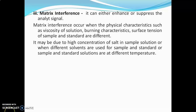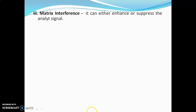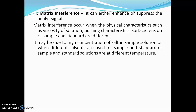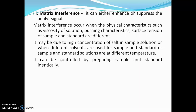Matrix interference occurs when physical characteristics such as viscosity of solution, burning characteristics, surface tension, and saturation of sample and standard solutions are slightly different. It may be due to high concentration of salt in the sample solution, different solvents used for sample and standard preparation, or sample and standard solutions being at different temperatures. It can be controlled by preparing the sample and standard identically.